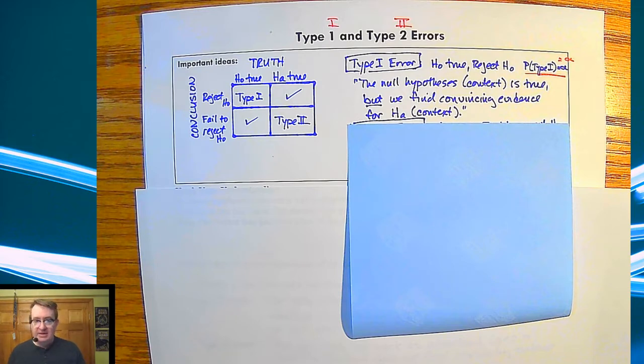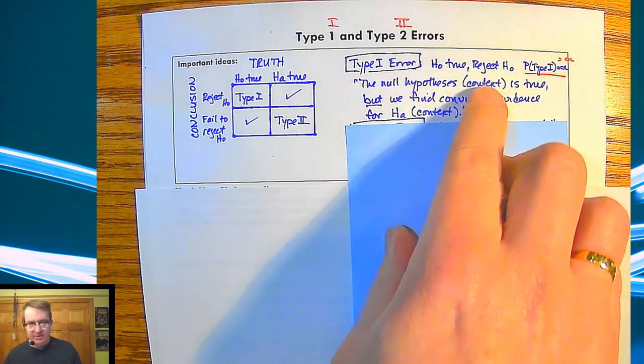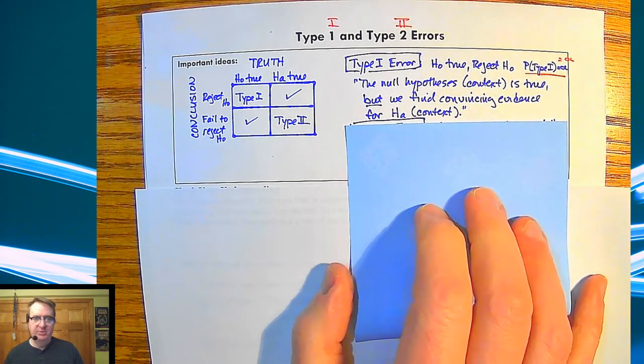So the null hypothesis in context is true, but we end up finding convincing evidence saying the alternative hypothesis is actually what should be going on. And you're going to write this out and put context in both of those. I'll show you an example here in a second.